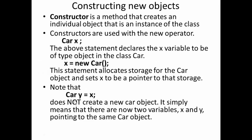How do we construct a new object? We do it via something called a constructor. A constructor is a method that creates an individual object, that is an instance of the class. Constructors are used with the new operator. So I can declare variable x to be a class car.